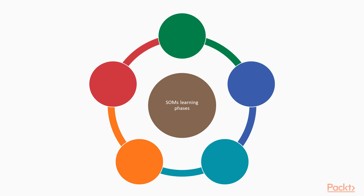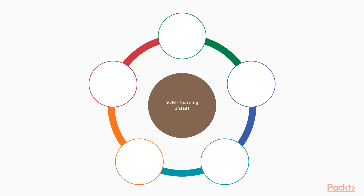The learning scheme of SOMs has the following phases: the initialization; the competition, in which the winner is determined; the cooperation, in which the topological neighbors are determined by the winner; the adaptation, in which the weights are updated to increase the importance of neurons related to specific training samples when dealing with similar samples from the same class; and the continuation, which means repeating the algorithm for a specific number of iterations until the input data is perfectly represented in two dimensions.